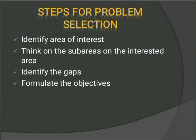The last and most important step is to formulate the objectives. After discovering and defining the research problem, the researcher should make a formal statement of the problem leading to research objectives. An objective will precisely say what should be researched, delineate the type of information that should be collected, and provide a framework for the scope of the study. So the steps are: identify your area of interest, think on sub-areas, identify the gaps, and then formulate the objectives.